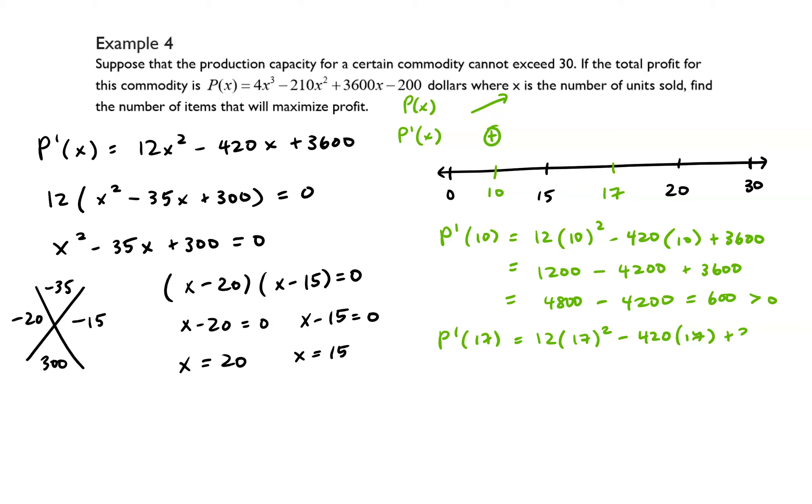And then let's evaluate p prime of 17. That is equal to 12 times 17 squared minus 420 times 17 plus 3600, and that ends up simplifying to negative 72, which is less than zero.